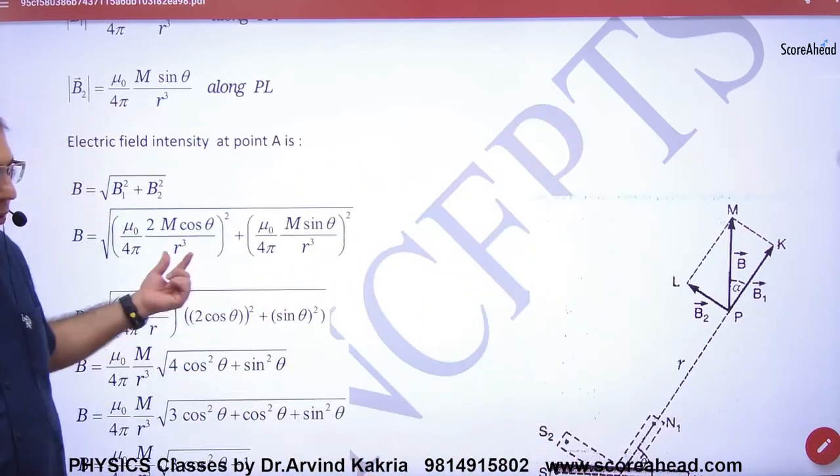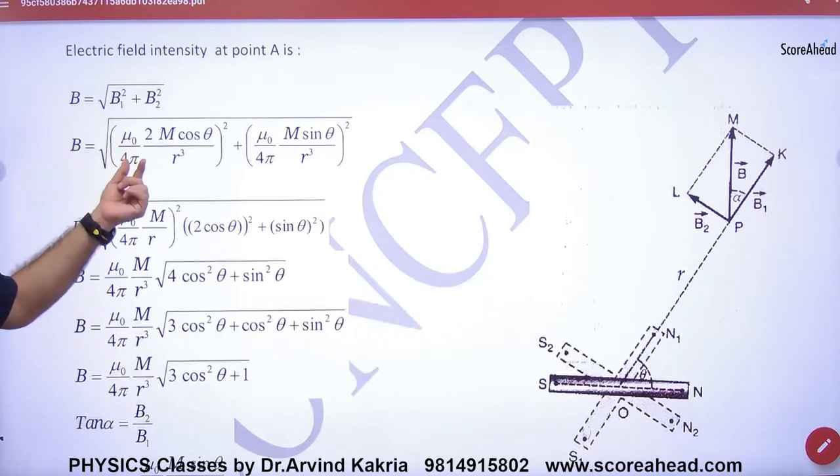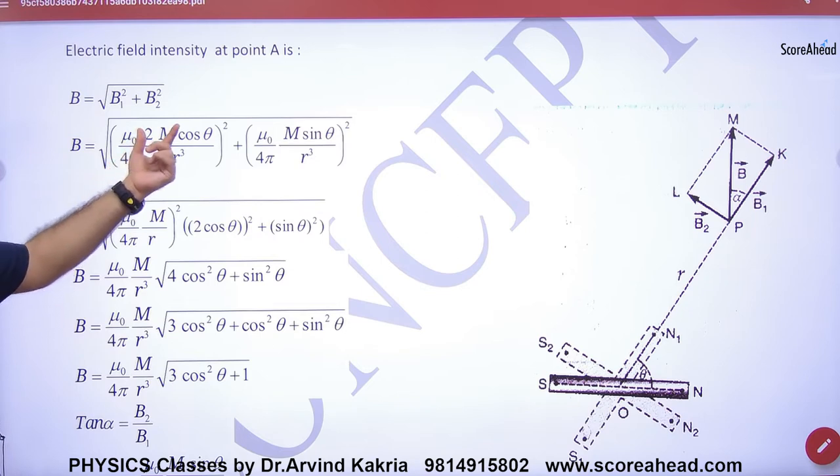B-axial square, B-equatorial square - we have proved it. It's the same. Just take the electrostatics expression, the same thing we have done where P is M and B-naught by 4. The same answer will come.